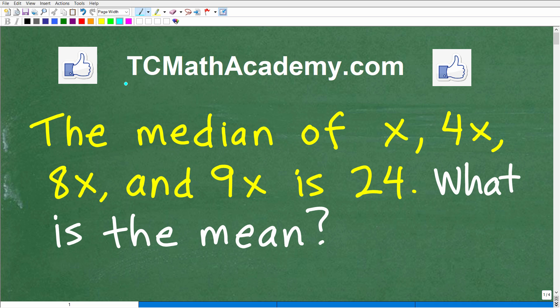Hello, this is John from TC Math Academy, and what I have for you here is an interesting algebra word prompt. What makes this interesting is that we need to understand some basic concepts from statistics, namely median and mean. Let me read the prompt to you. It says the median of x, 4x, 8x, and 9x is 24. What is the mean? So that is the question.